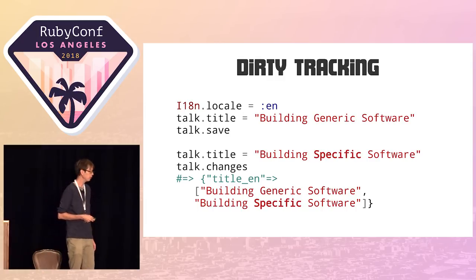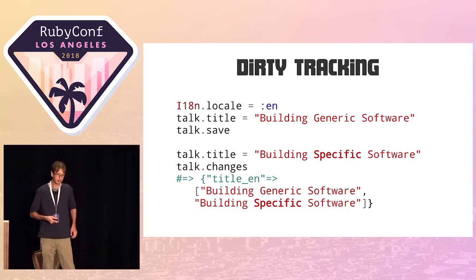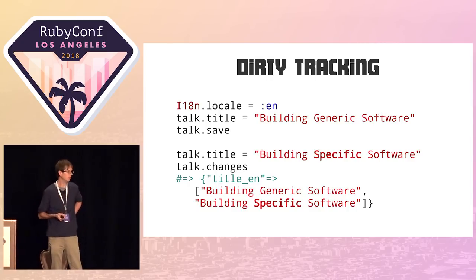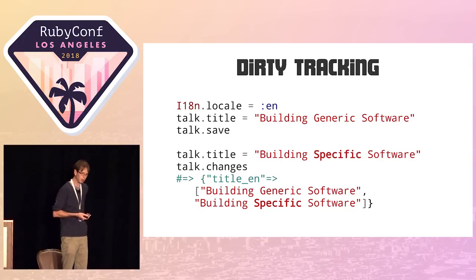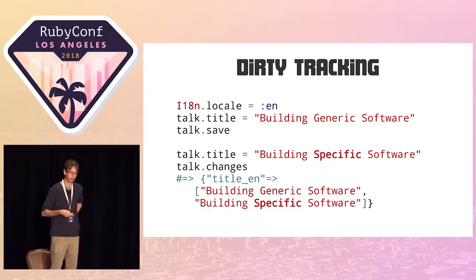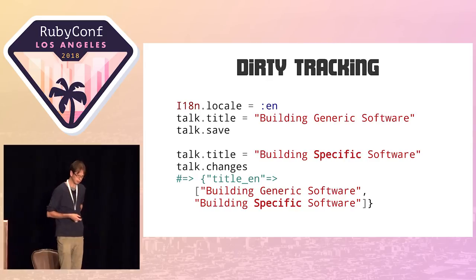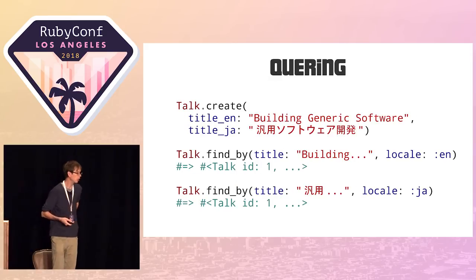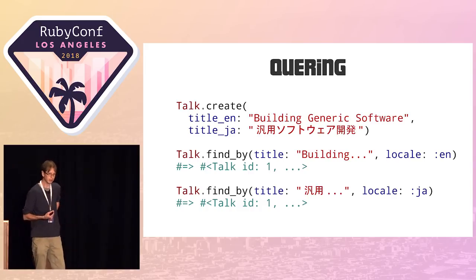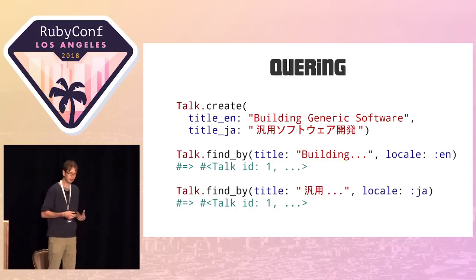There are other patterns you can support. Dirty tracking — if you know, that's an ActiveModel and also ActiveRecord and Sequel feature — allows you to change a value and see the changes. This won't work by default with translated attributes because your ORM won't know about that attribute. So you have to do some magic to make this work. If you set a title to 'generic software' then 'building specific software,' you'd see the change, showing that the English title has changed. There are also more complex things like querying: creating a talk with English and Japanese translations and then finding the talk which in English has the title 'Building Generic Software.'